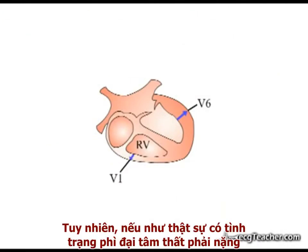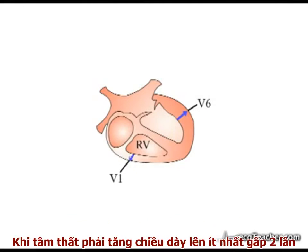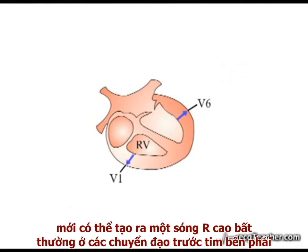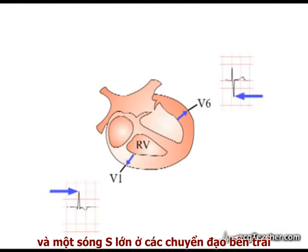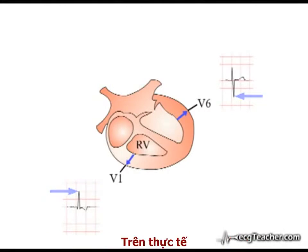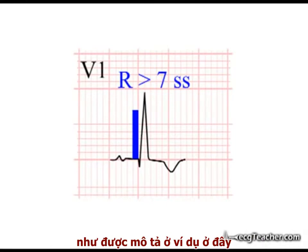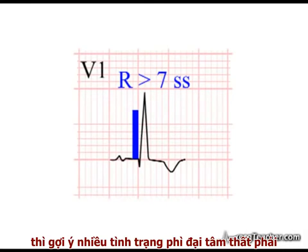However, in the presence of gross RVH, when the RV wall has increased to at least twice its normal thickness, the depolarizing voltage generated in the enlarged right ventricular muscle mass can produce abnormally tall R waves in the right-sided chest leads and persistent large S waves in those on the left. An R wave in lead V1 higher than seven small squares in amplitude, as illustrated in the example shown here, is highly suggestive of the presence of underlying RVH.